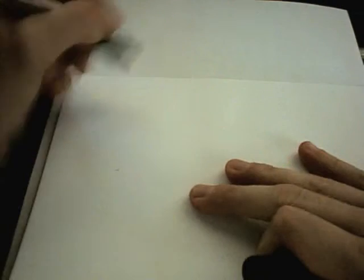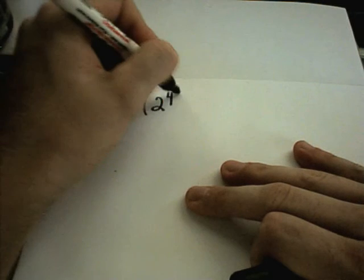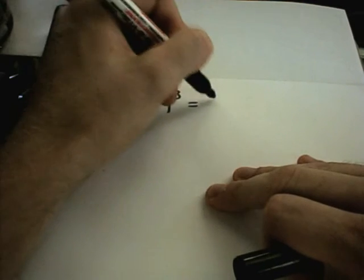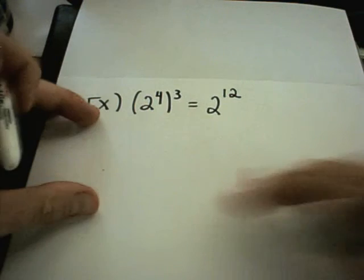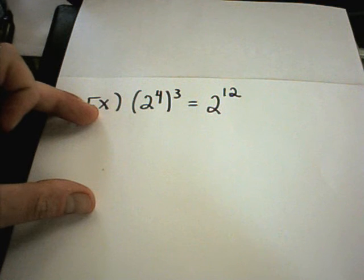Now let's do some more complicated examples combining these rules. Suppose I have 2 to the fourth, raised to the third power. This uses the property where the exponent is inside parentheses, so I just multiply: 4 times 3 gives 2 to the 12th. You could multiply that out, but we'll leave it as is.